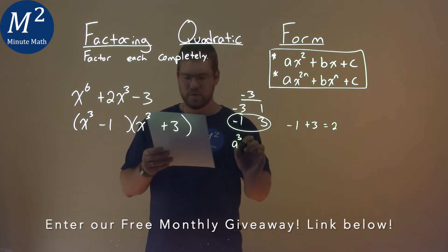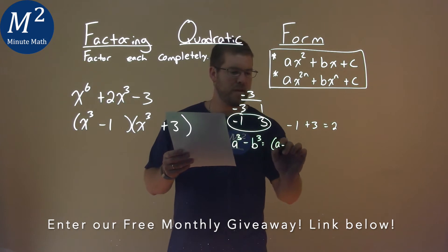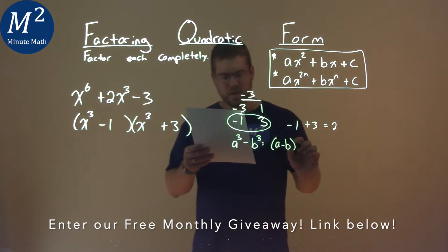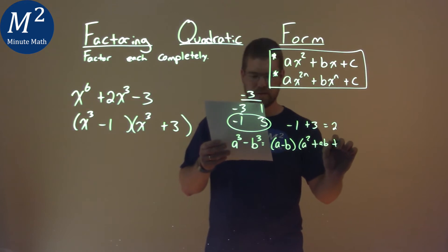Difference of cubes formula says that if we have a cubed minus b cubed, that is equal to a minus b times a squared plus ab plus b squared.